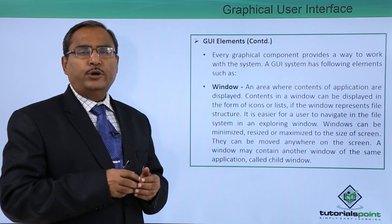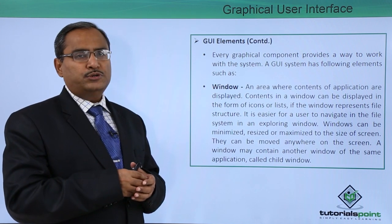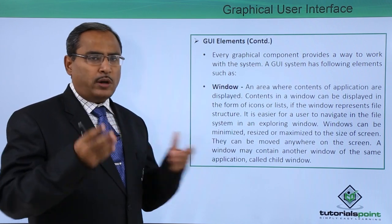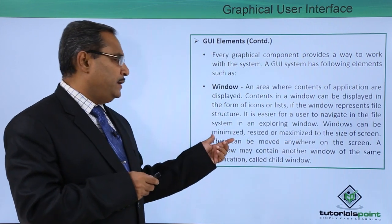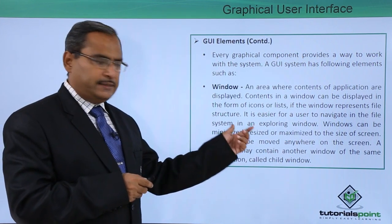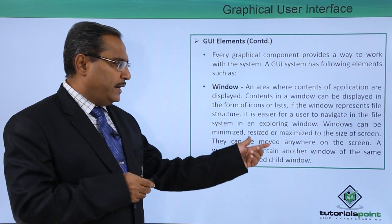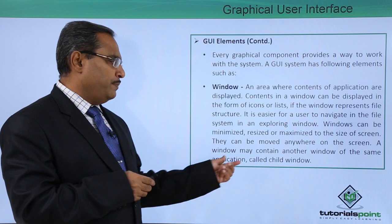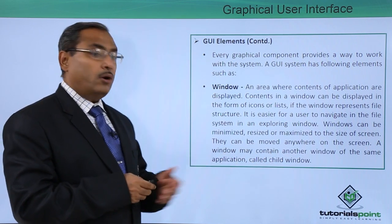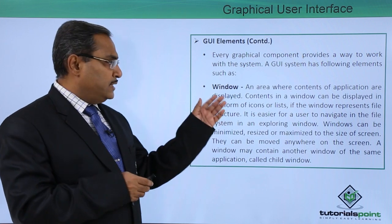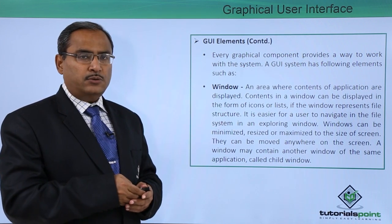For example, in Windows operating system we have Windows Explorer, where you can explore the file system through that window. Windows can be minimized, resized, and maximized with the size of the screen; they can be moved anywhere on the screen. A window may contain another window of the same application called the child window.